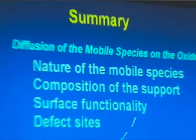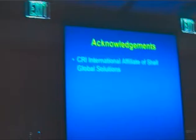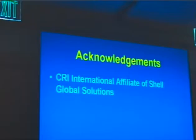In summary, I've covered two specific areas. First, diffusion of mobile species along the oxide surface, controlled by the nature of the mobile species — whether silver, silver chloride, silver hydroxide, or silver oxide — the composition of the support, surface functionality, and defect sites. Second, detachment and reattachment energies, controlled by metal-metal bonding, the metal-metal bond strength compared to the metal-support bond strength, the size and shape of the particle, adsorbed intermediates, and the specific location of the mobile intermediates. I'd like to acknowledge the support from CRI International, an affiliate of Shell Global Solutions, and would be happy to answer any questions.